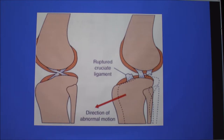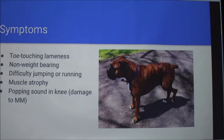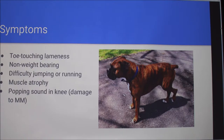When it is ruptured, you have the two parts separated and the tibia will be able to move forward, which is pretty painful and difficult to walk. Symptoms include toe-touching lameness and not weight-bearing, as well as difficulty jumping and running. Over an extended period of time they can start to lose some of the muscle in those back legs. Once there starts to be damage to the medial meniscus, you can also hear a popping sound as those bones are rubbing together.